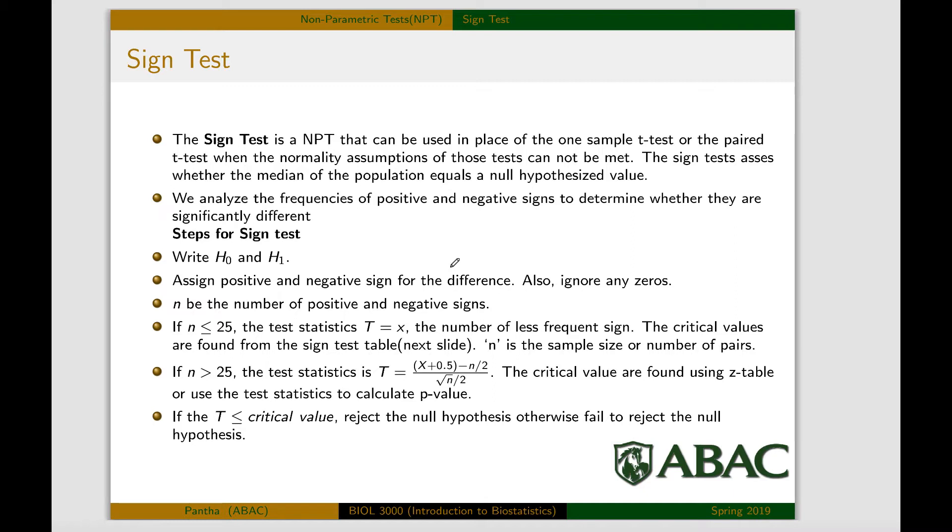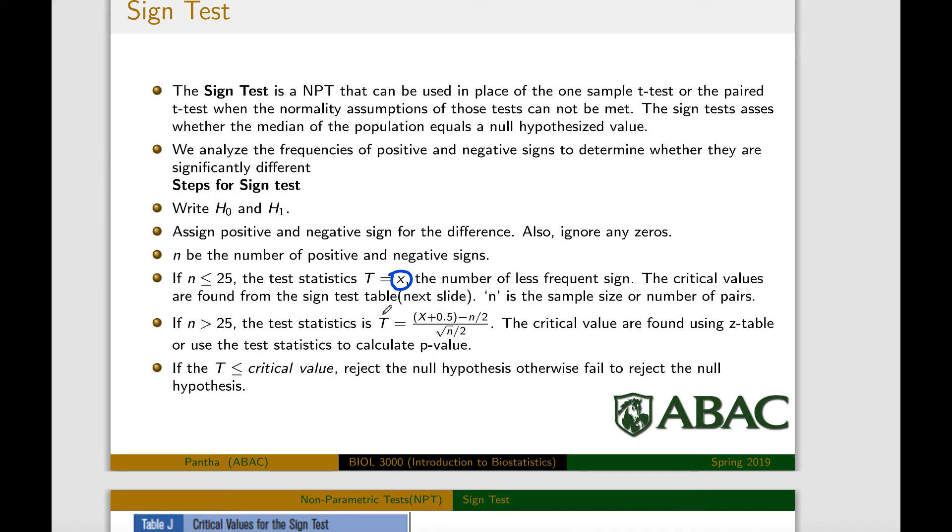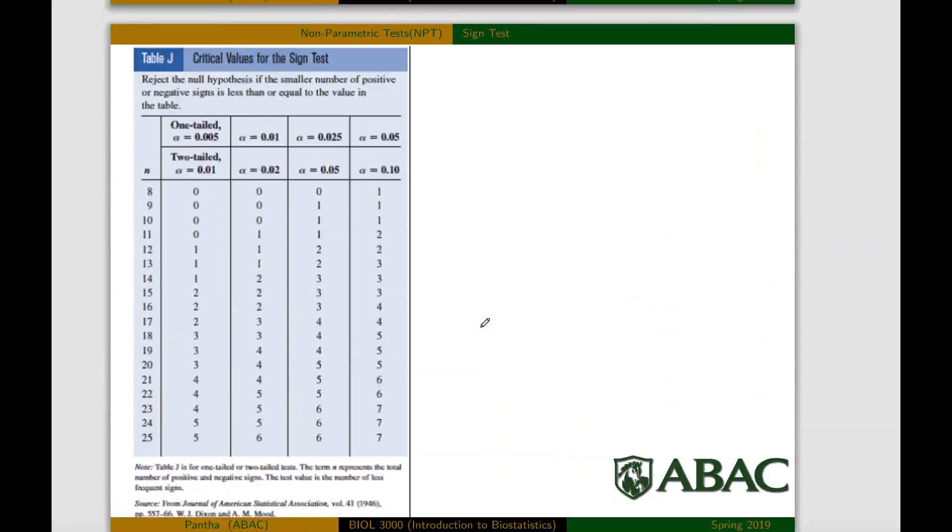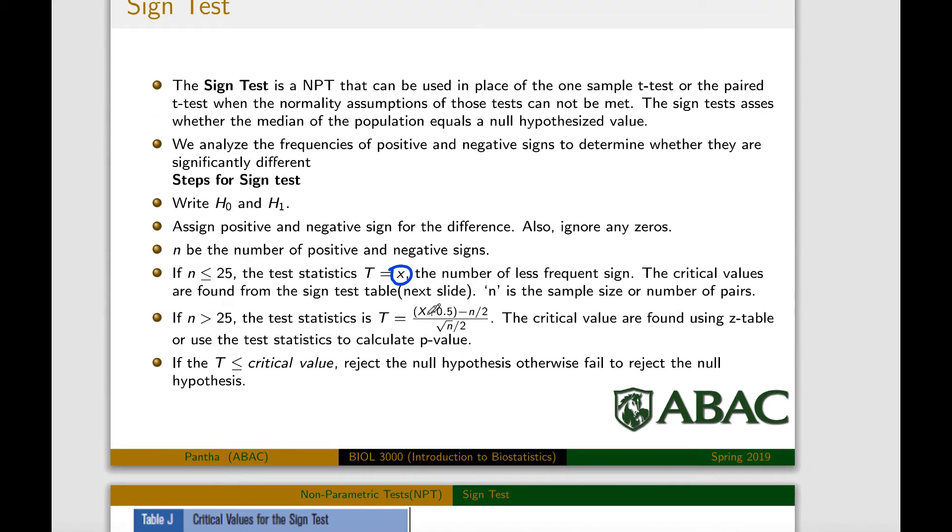And then we find out the sign. If the sample size is less than or equal to 25, then the test value or the test statistic is x, which is basically the number of the least repeated sign. And if the sample size is bigger than 25, then we find out the test statistic using this formula, where x is basically the number of least repeated value again. So in this case too, x is number of least repeated value and n is the sample size. This formula finds out the test value in case of the sample size greater than 25.